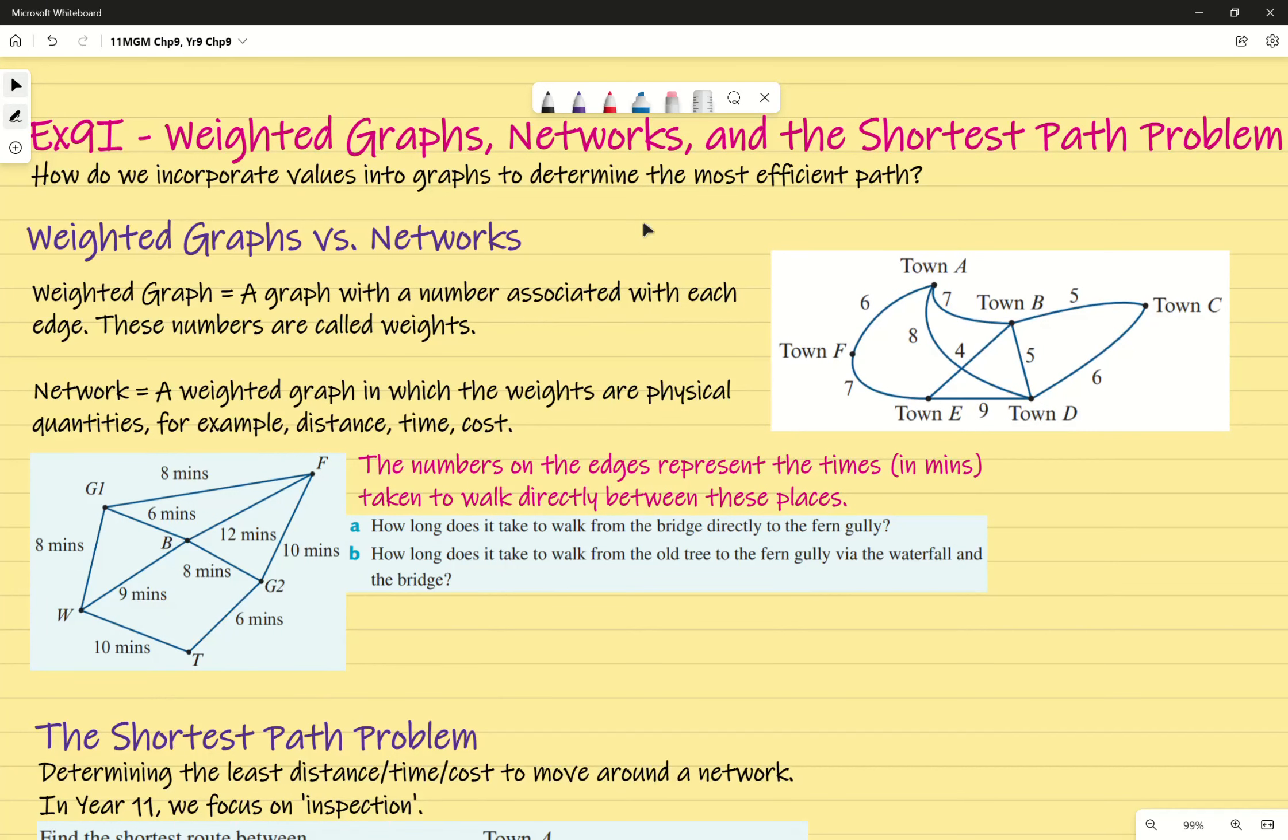Of course the chapter is called graphs and networks so it's important that we know the difference. Weighted graphs are a graph with a number associated with each edge. These numbers are called weights. That's why we call them weighted graphs because each edge has a different weight.